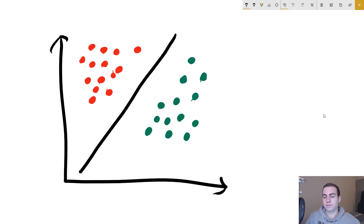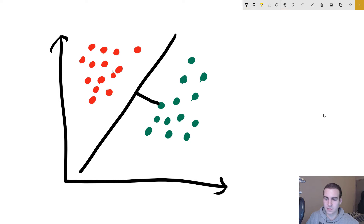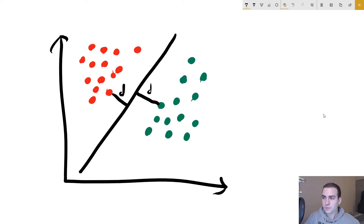This one would probably be the best hyperplane for our dataset, and the reason is because the two closest points to the line are actually the furthest possible points away — the distance between them and the line is the largest distance that we can generate. No matter what other points we pick or where we draw this line, there's no way that we can find a distance d that is greater than this. Why would we want this distance to be as large as possible?